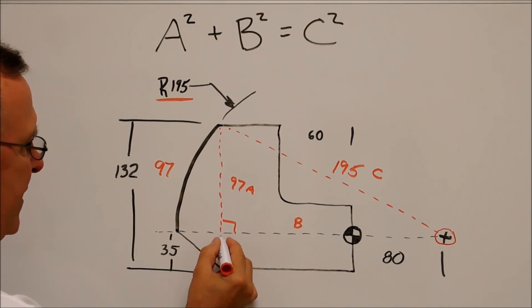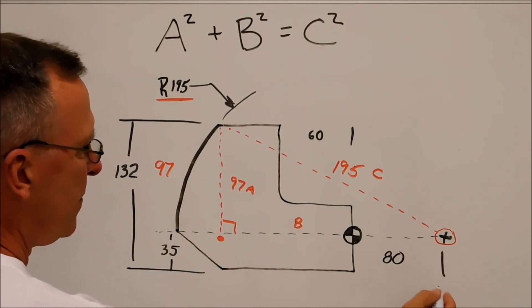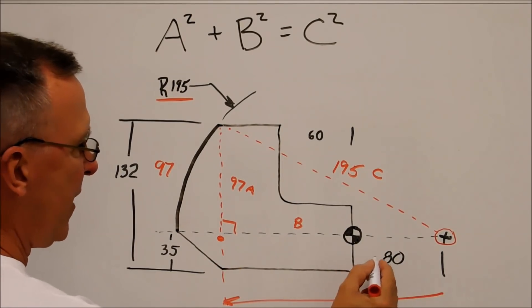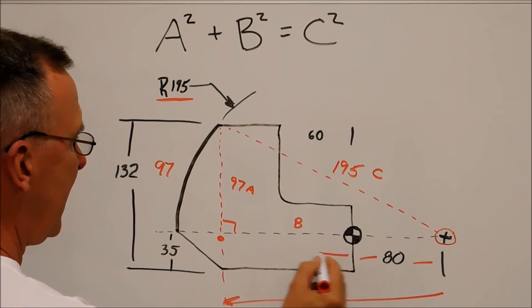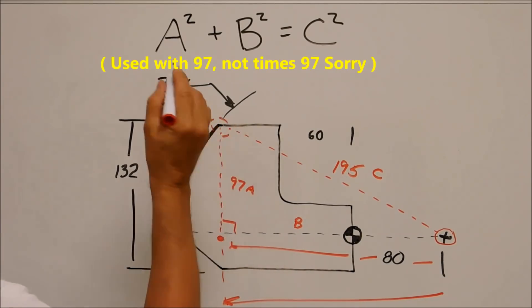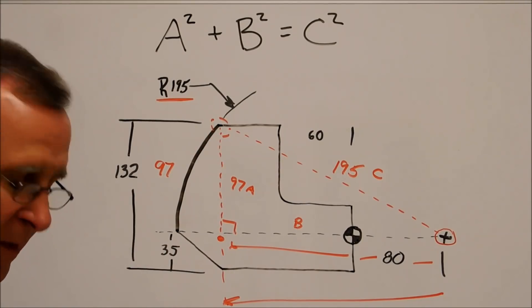Once you know what the base leg is this way, subtract the offset, and that gives you this motion right here times 97. Easy to find that point, not a problem.